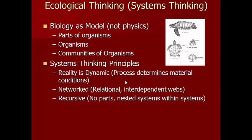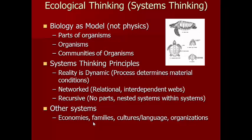Some basic systemic principles: first, reality is dynamic — processes determine material conditions. Weather, metabolism, the temperature of the planet are all outcomes of interacting forces, ever changing and in flux. Second, things are networked — something is what it is because of the interdependent web it's located within. The nature of insects in Hawaii changed drastically once ants were introduced because those interdependent webs changed. Third, things are recursive — each thing is a system within a larger system.